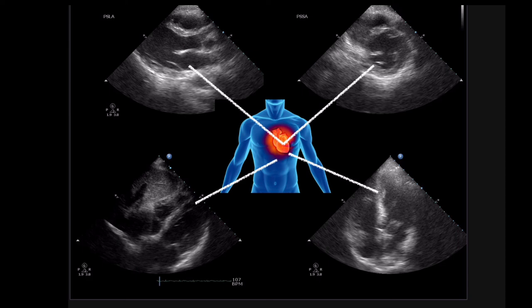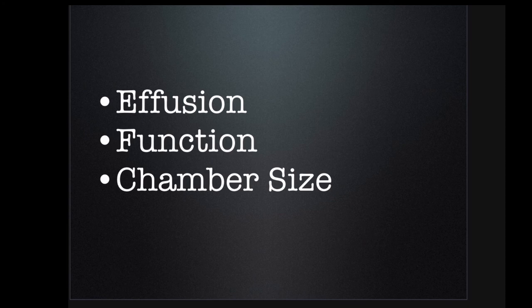When I'm teaching ultrasound to new learners, I'm focused on getting them comfortable with the four views and having them understand what is valuable about each view. When approaching this to teach someone else, you want them to understand why you need a sub-xiphoid, parasternal long, parasternal short, and apical four. The three main things you're looking for are: do they have an effusion, what's the LV function, and what are the relative chamber sizes.